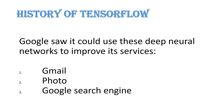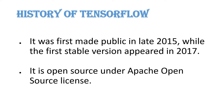Google saw that it could use deep neural networks to improve its services, which it implemented for Gmail, photos, and Google search engines. Google introduced the TensorFlow package in 2015, but the first stable version was released in 2017 only. After 2015 we were not getting a correct stable version — after 2017 only did we get a stable version. It is open source under an Apache open source license — you can modify it, create your own functions, and implement within it.